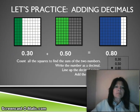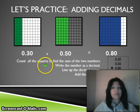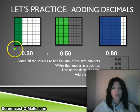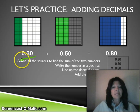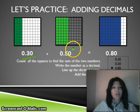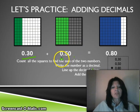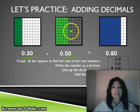Let's think about adding decimals this way. On this hundredths chart, thirty are shaded in — thirty out of the hundred — so it's thirty hundredths, which is the same as three-tenths because three columns of ten are shaded in. Added to this chart, you have fifty hundredths, meaning fifty of those are shaded in, or five rows of ten, which is five-tenths. Thirty hundredths plus fifty hundredths added together equals eighty hundredths.